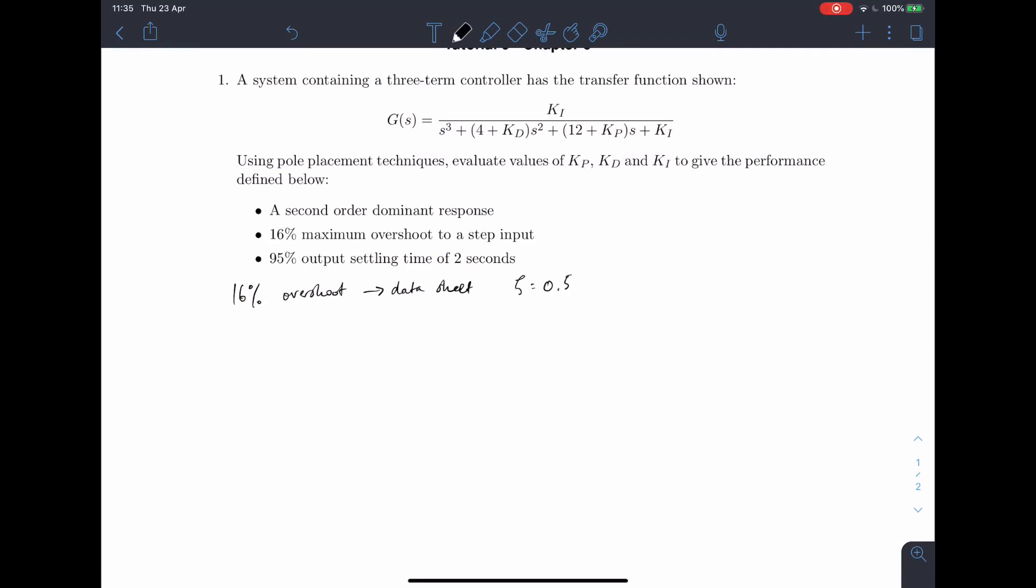And now we know that the angle between the origin and the poles for the second order dominant response, the cosine of that angle must be equal to zeta. And so from this, we can work out what that angle is.